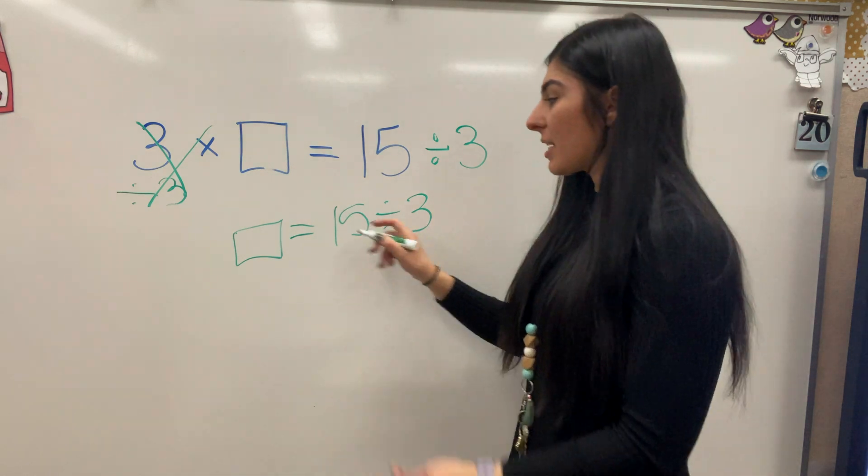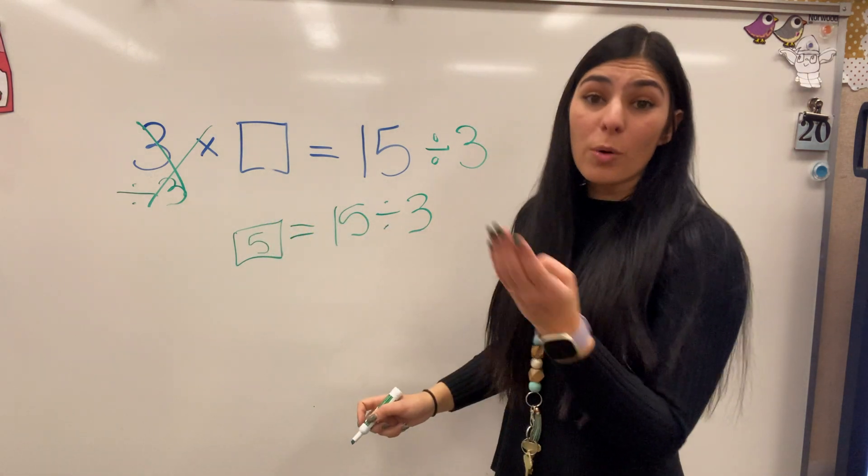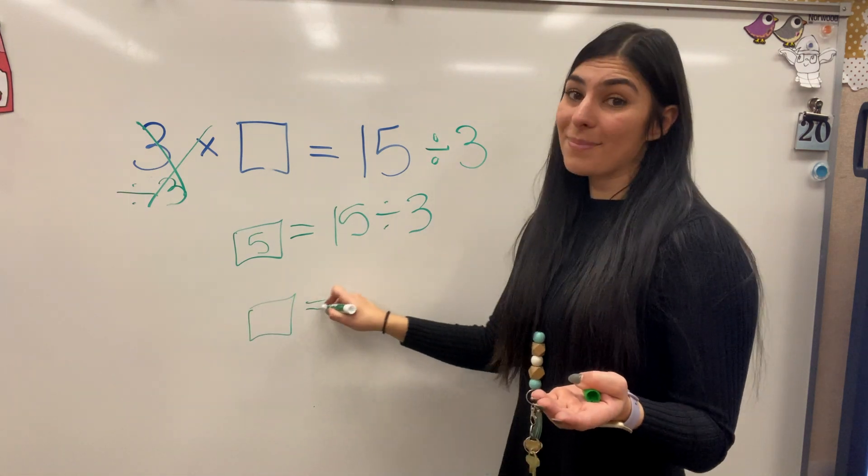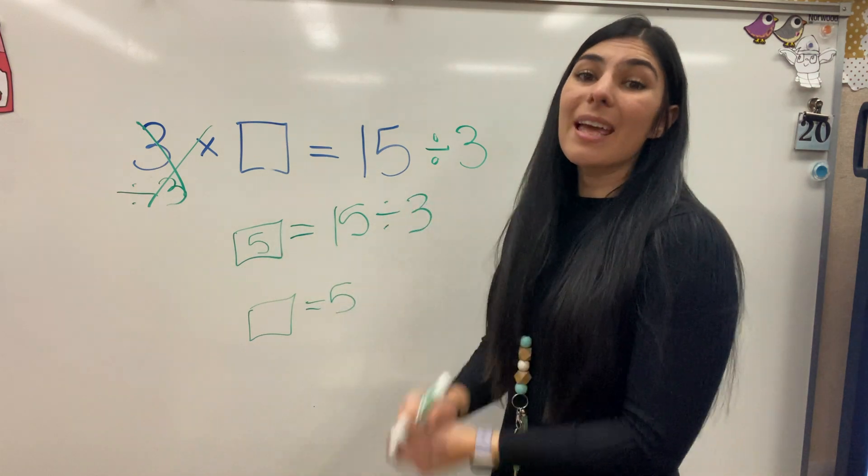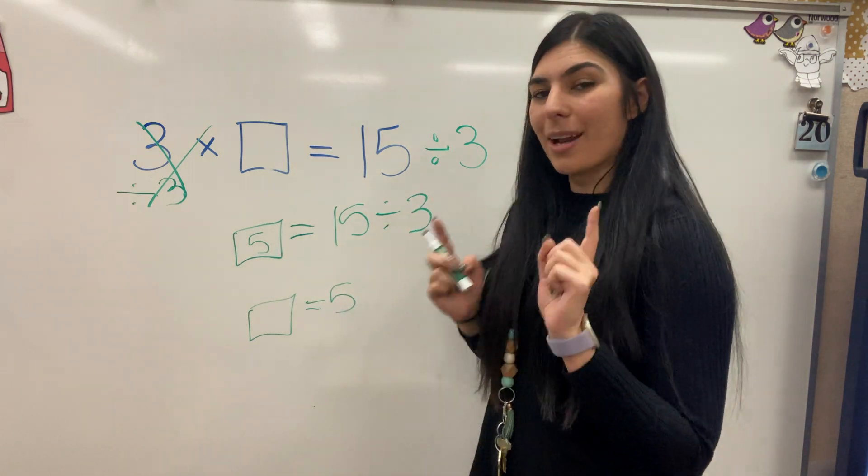So 15 divided by 3 equals 5, which again means our key, the box equals 5. If you plug in the 5 to any of these equations, they will be the correct answer, the correct product.